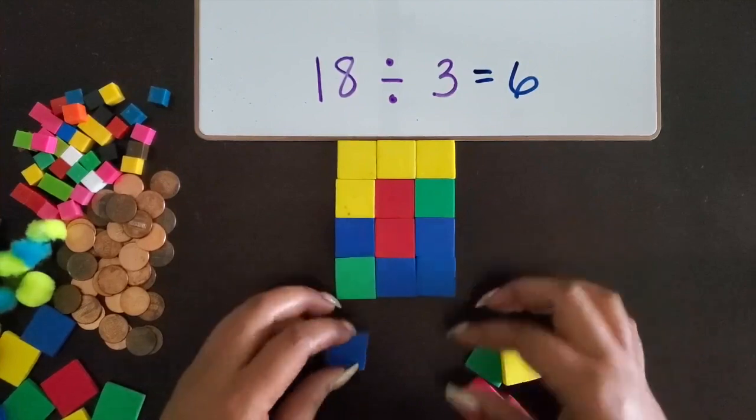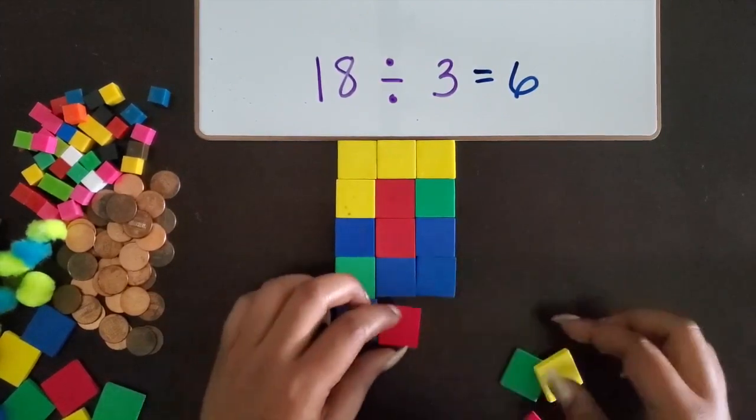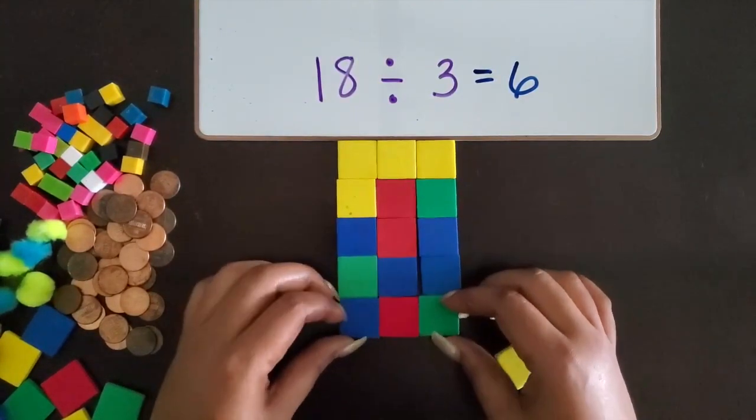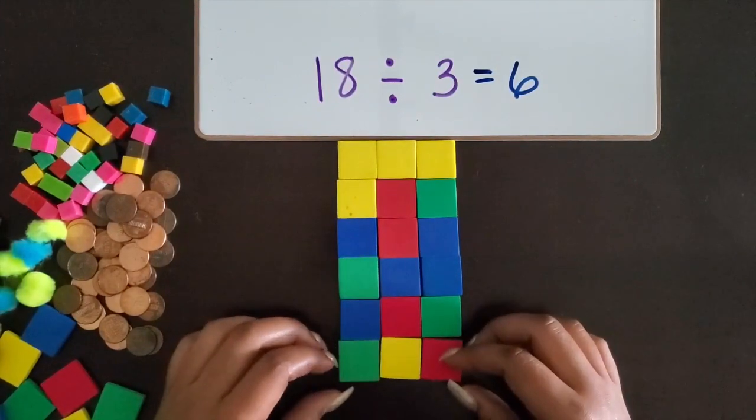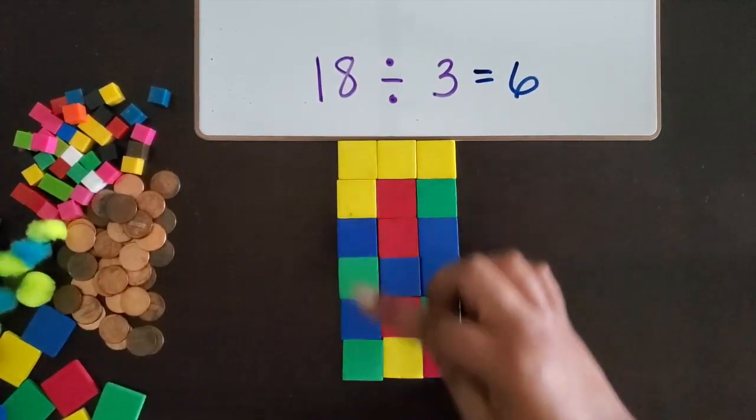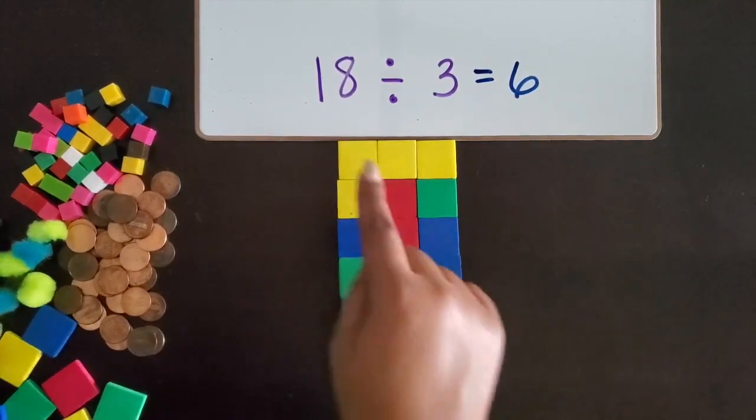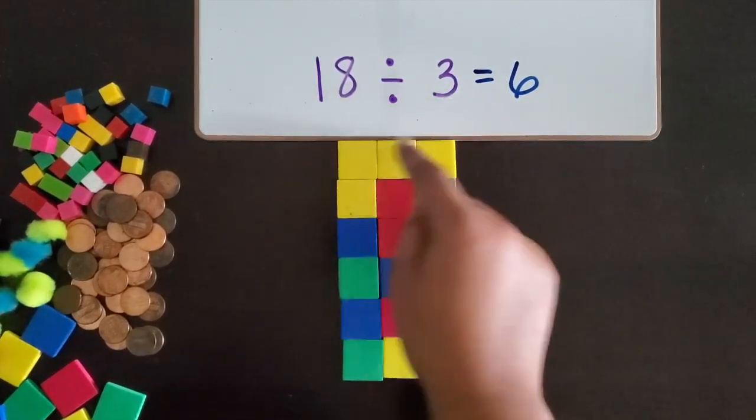Okay, so far we have four rows of three. All right. So I used up all 18 square units. There are three square units as the width.